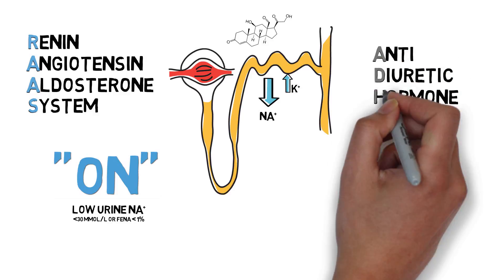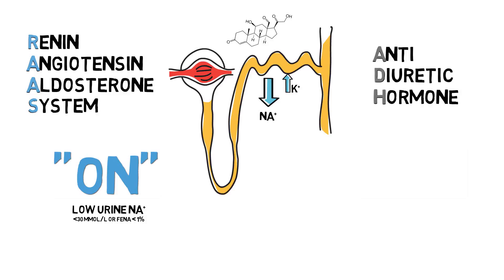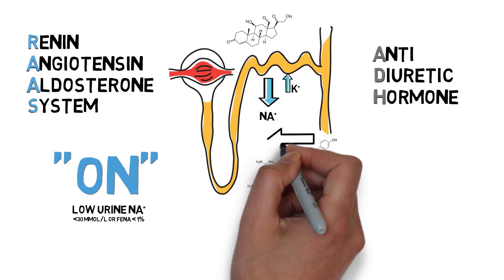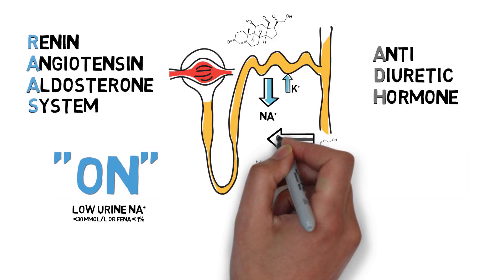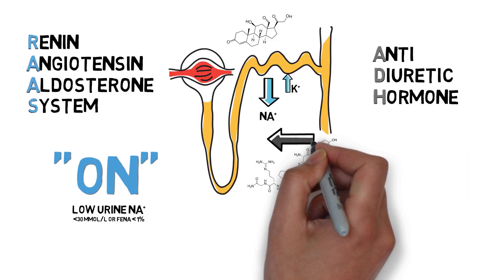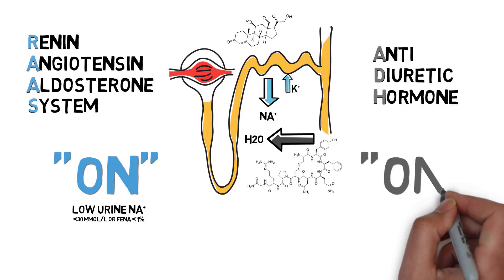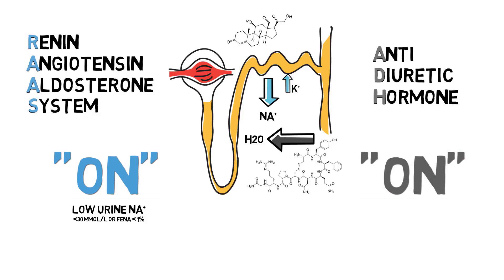Antidiuretic hormone — ADH or vasopressin — is made in the pituitary gland. It acts on the collecting ducts of the kidney, where it opens aquaporin channels, leading to the resorption of water. By resorbing water, the urine will be very concentrated, meaning there will be lots of particles in urine compared to water. So if your ADH is on, the urine osmolality is high, being higher than in serum.